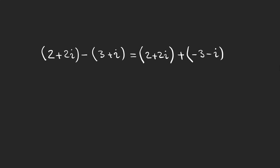We do the same thing as addition: the real part is two minus three, and the imaginary part is two minus one i, which gives us minus one i, giving us a complex number.